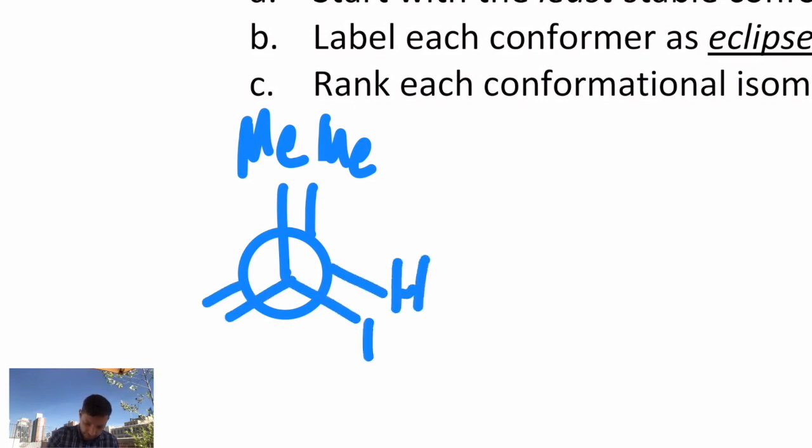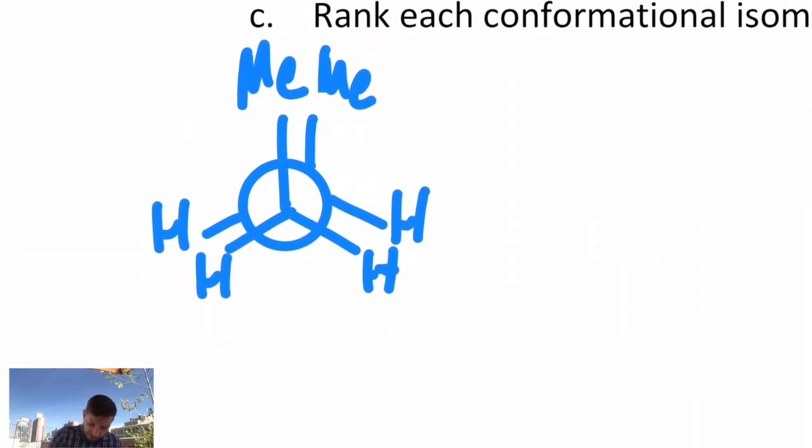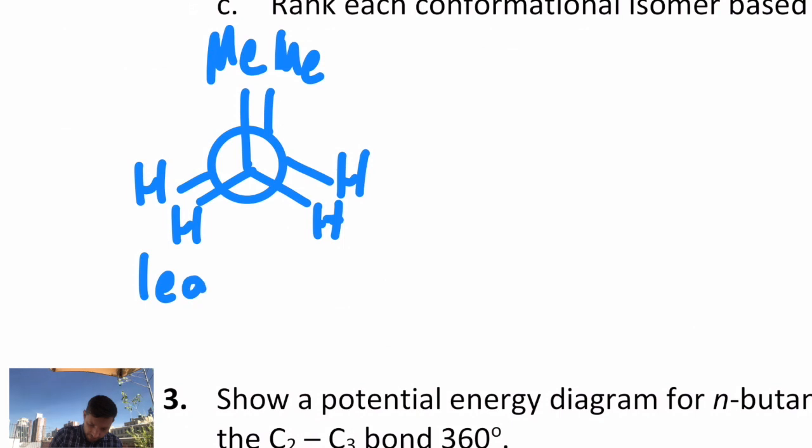And this is one way of showing that. This is my least stable. And that's because those methyls are almost occupying the same space. They're separated by a couple of carbons, but they're much closer to each other in space than they would be in any other possible Newman projection. We call this an eclipsed conformation.